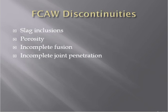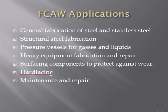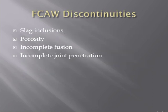FCAW discontinuities include: slag inclusion — slag trapped at the interface, detectable by radiography; porosity — caused by electrode contamination; incomplete fusion — dependent on current and voltage levels; and incomplete joint penetration — also caused by insufficient current. To avoid these discontinuities, all variables including current, voltage, electrode diameter, and travel speed must be correctly set.